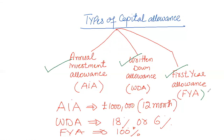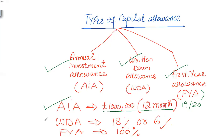The rates will be available in the exam. The AIA limit is £1 million for tax year 2019/20, and remember this £1 million limit is for a period of 12 months. If the period is different, this value will be time apportioned. The WDA is available at 18% per annum or 6% per annum. First Year Allowance is always available at 100%.